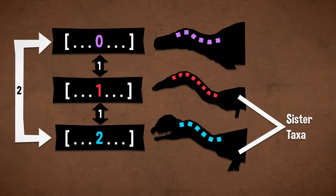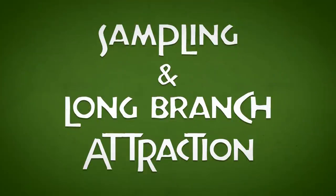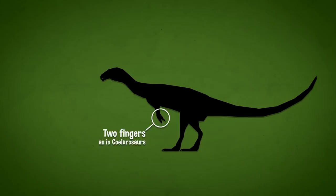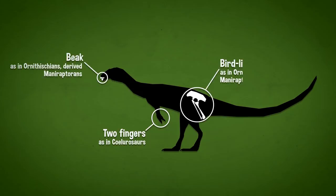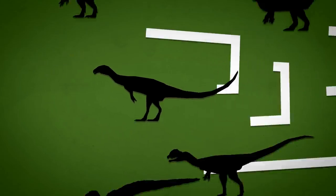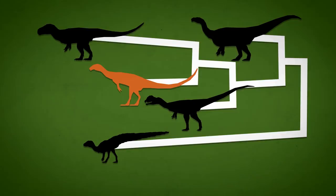We also need to make sure that our character set can answer the question we're asking. There's an enigmatic dinosaur called Chilesaurus. They have a combination of Tetanuran, Coelurosaur, Ornithischian, and even Sauropodomorph features. If you showed me a drawing of one of these, I would think you made up a dinosaur. Workers have generally recovered them as Tetanuran theropods.